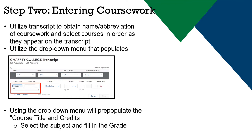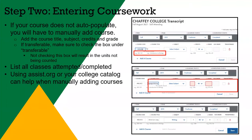Enter the courses in the order they appear on your transcript. If you cannot find the course in the drop-down menu, you will need to manually enter the course. Manually entering courses means that you will need to fill out the course code, course title, subject, credits, and grades. If this course is transferable, you must click the box under transferable. If it is not marked as transferable, this course will not count towards your overall unit count and it can impact your admissions decision. If you are unsure if a course is transferable, assist.org or your college catalog can help you in making this determination.